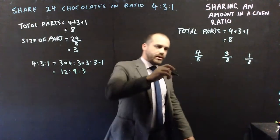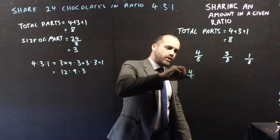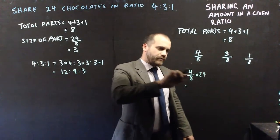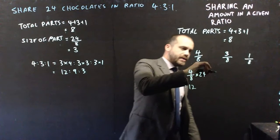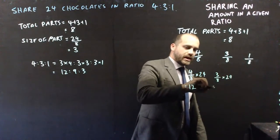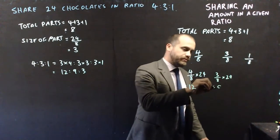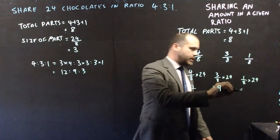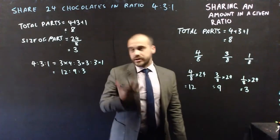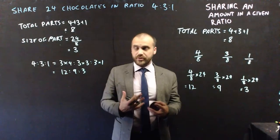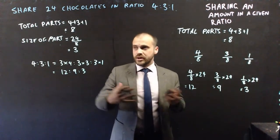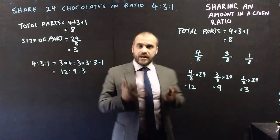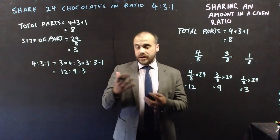Working the fractions method: the first person gets 4 eighths — which simplifies to 1 half — times 24, giving 12. The next person gets 3 eighths times 24, which equals 9. And 1 eighth times 24 equals 3. You don't need to know both methods, but you do need to know how to share an amount in a given ratio. Decide which method you prefer — working with parts or working with fractions — either way, you need to be able to share amounts among two or more people.